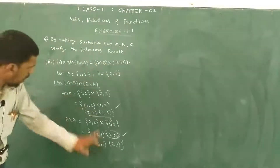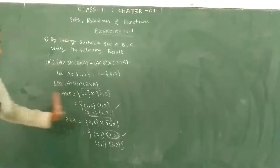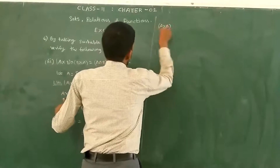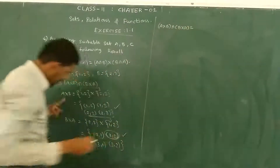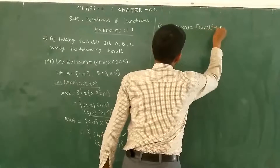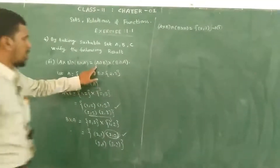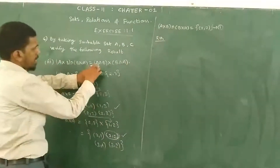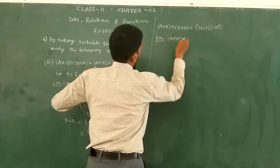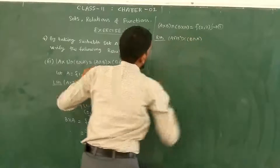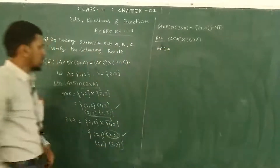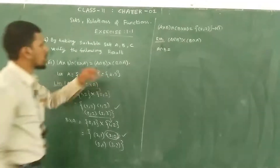Now A cross B intersection B cross A. The common element is (2,2). This is equation number 1. For the right hand side, A intersection B cross B intersection A. A intersection B — A and B common — equals {2}.